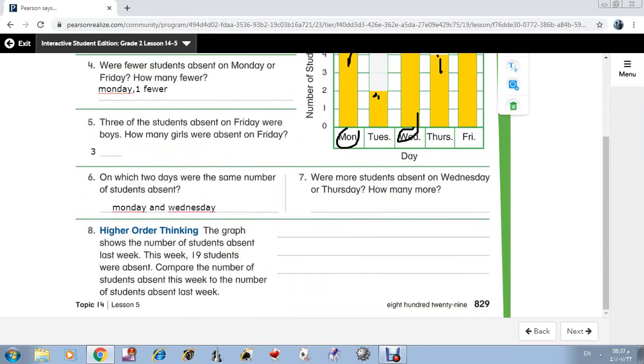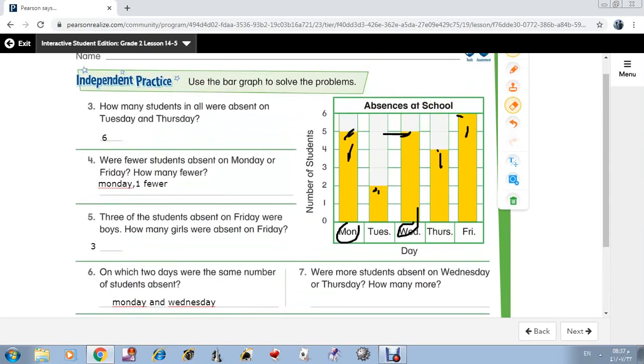Number 7: Were more students absent on Wednesday or Thursday? On Wednesday or Thursday? Yes, great. More students absent on Wednesday. And how many more?